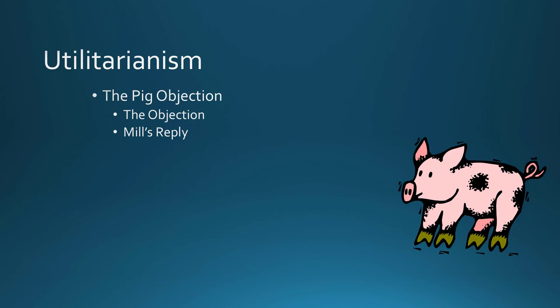Mill was an empiricist, believing that whatever you know about the world comes through the senses, so his test will be an empirical one — kind of like a taste test between Pepsi and Coke, where you decide which is better by which more people prefer. So if you're wondering which pleasure is more desirable, you give people the survey, and if all or almost all people who experience both prefer one over the other, regardless of any moral obligation they might otherwise think they have, that would be more desirable.